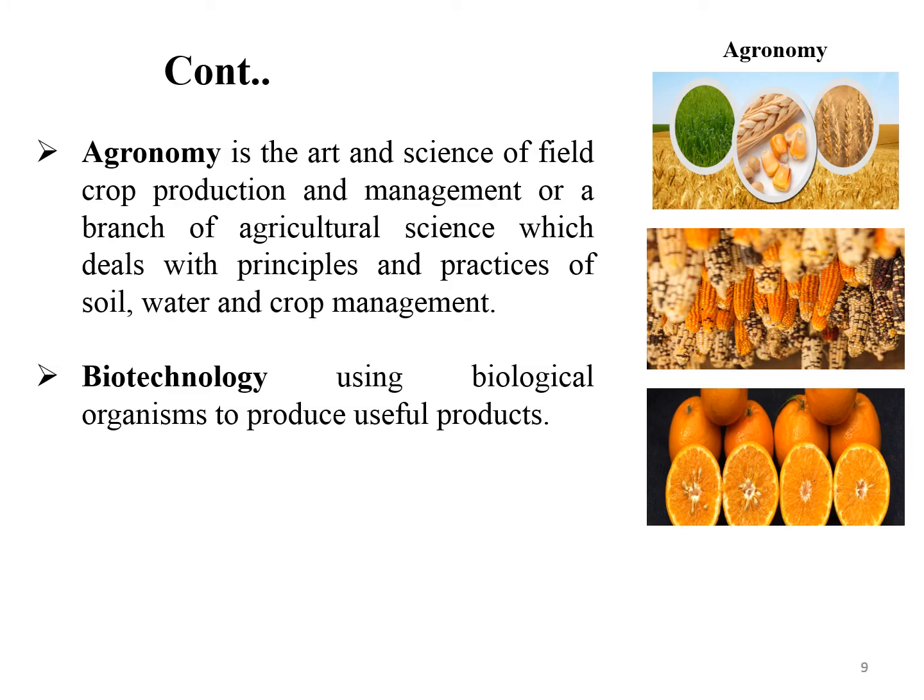The term agronomy is derived from two Greek words: agros meaning field and nomos meaning to manage. Agronomy is the art and science of field crop production and management, or it is a branch of agricultural science which deals with the principles and practices of soil, water, and crop management.